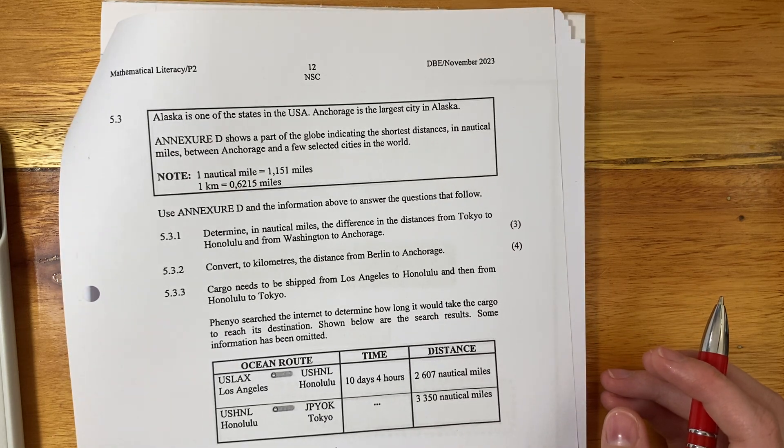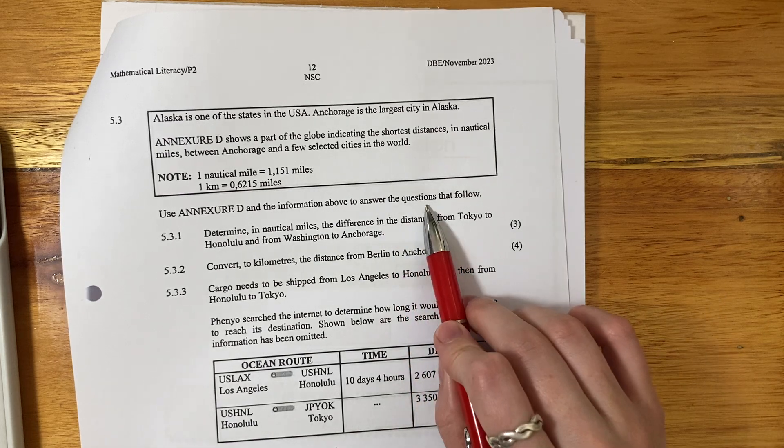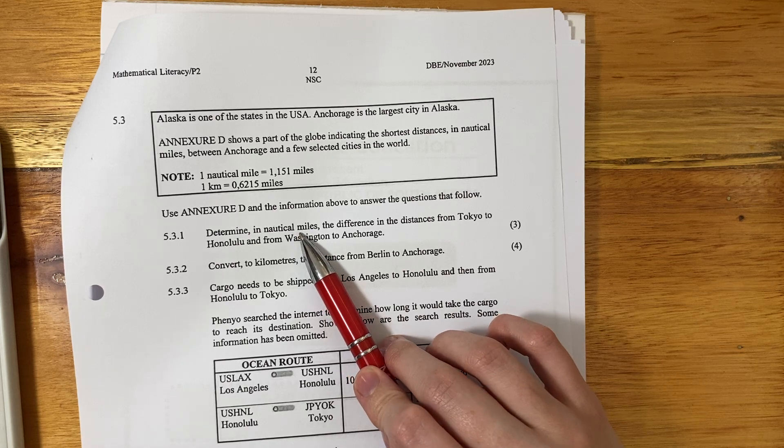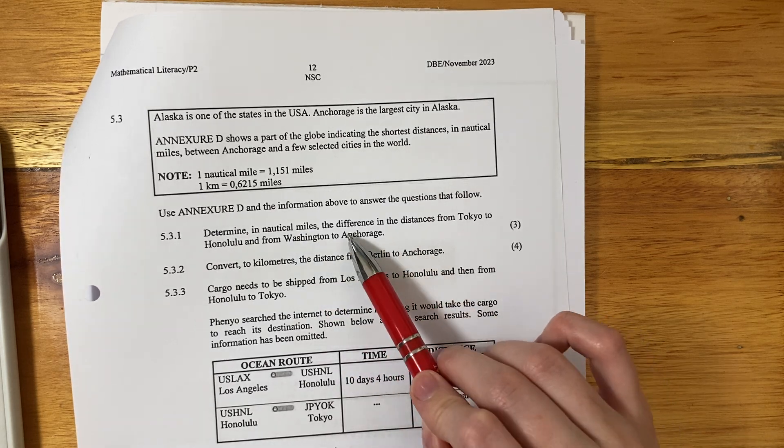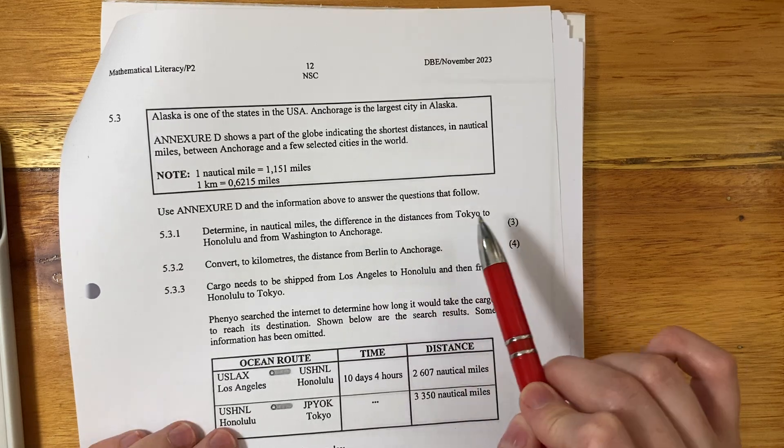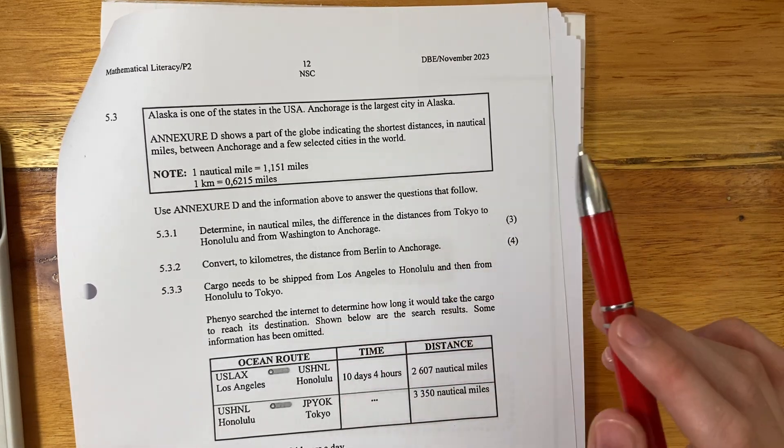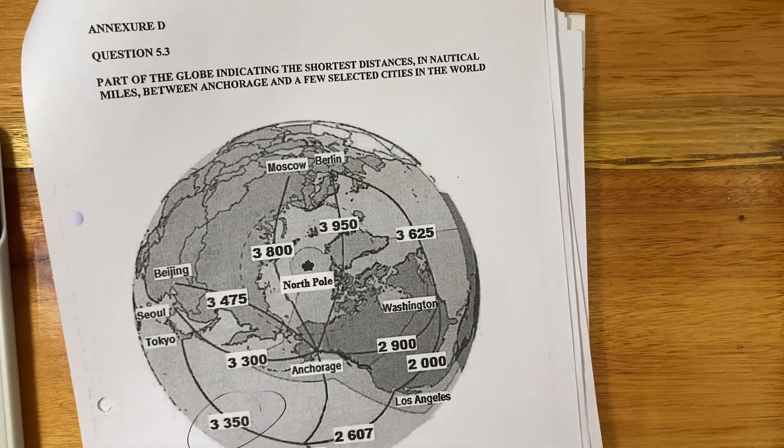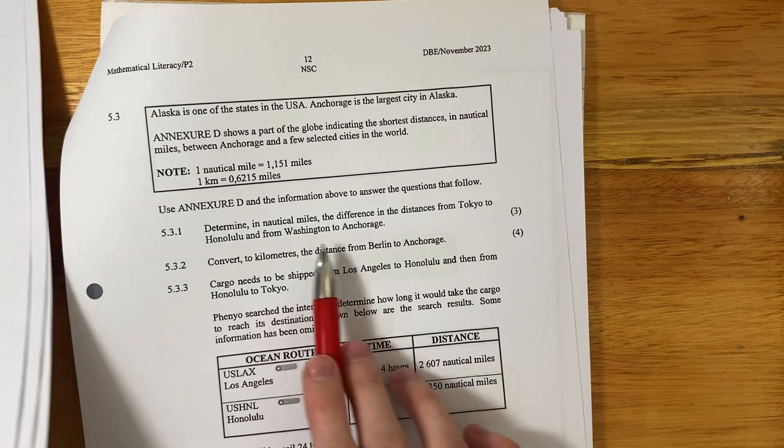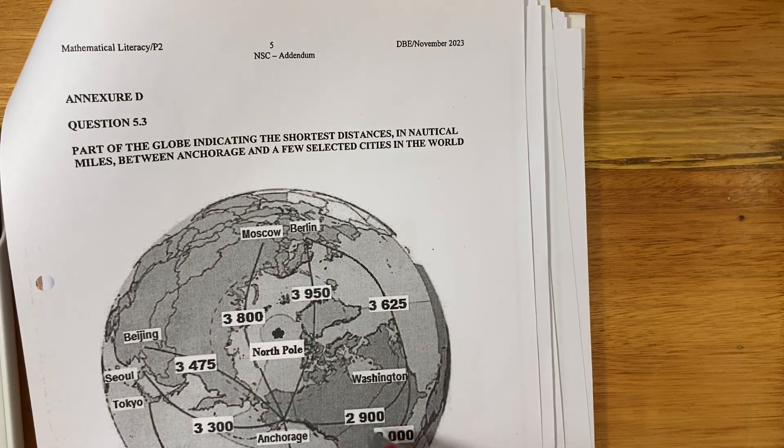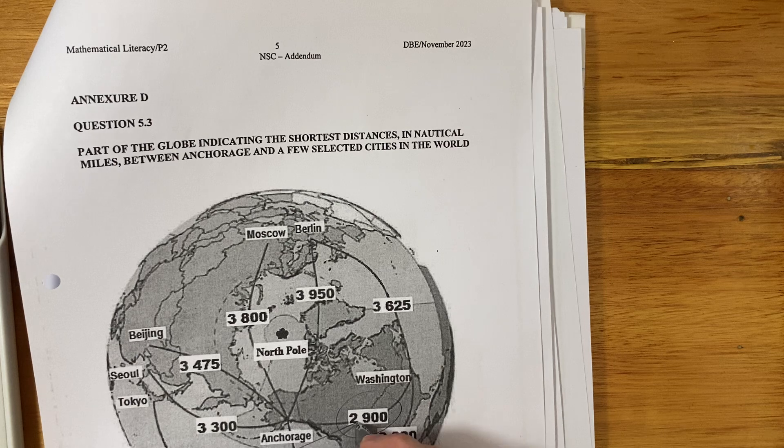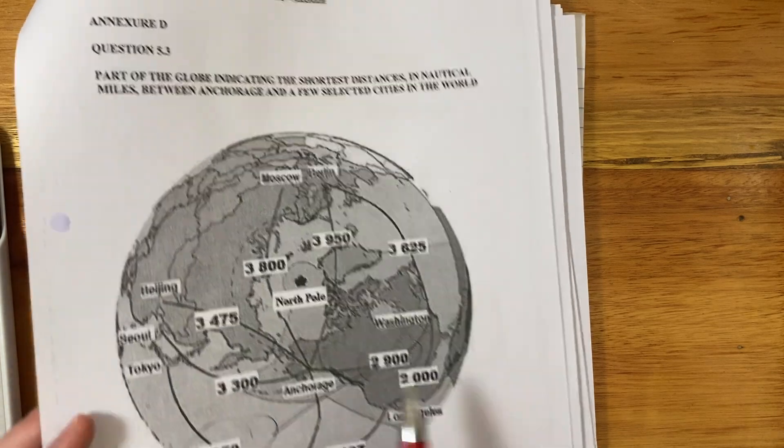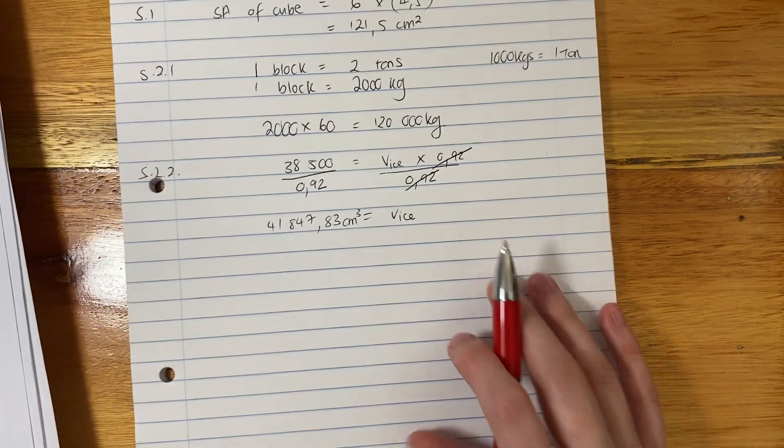Use annexure D and the information above to answer the questions that follow. Determine in nautical miles, so that's great, we don't need to do any conversions. The difference in the distance from Tokyo to Honolulu and from Washington to Anchorage. What is the distance from Tokyo to Honolulu? There it is. Then what is the distance from Washington to Anchorage? Now I want to find the difference between these two values. So we're going to say 3350 minus 2900. That's the difference. Difference means subtraction.